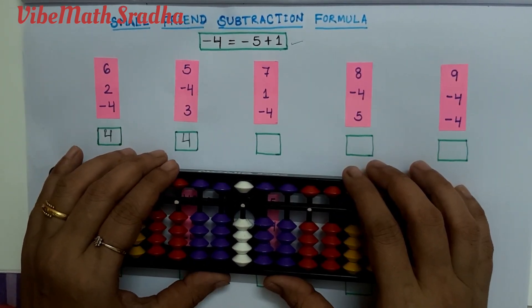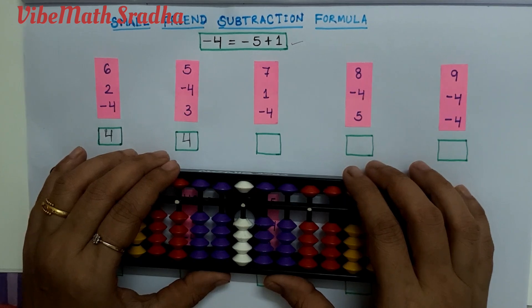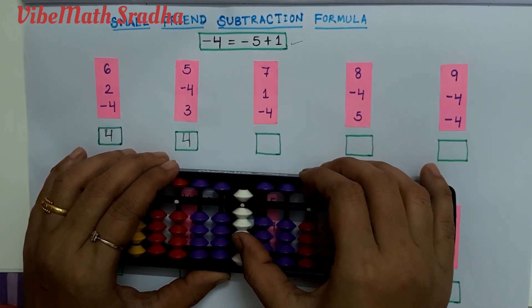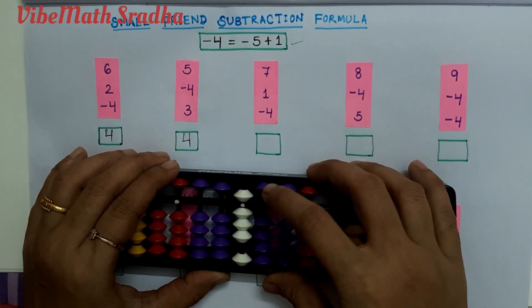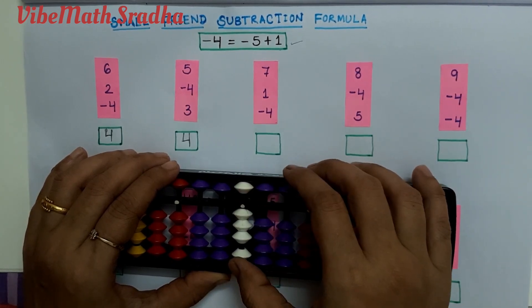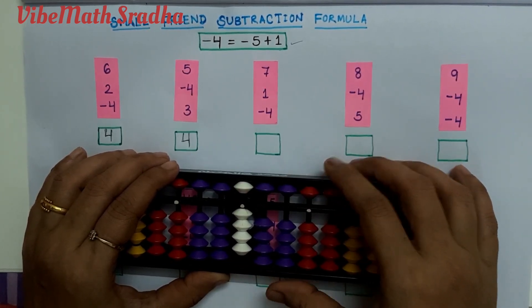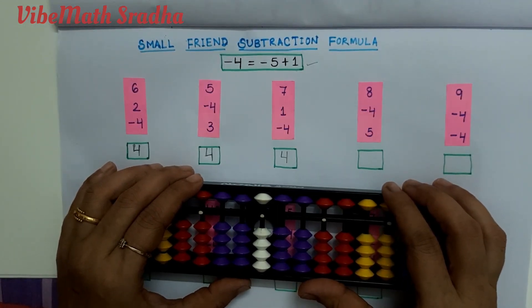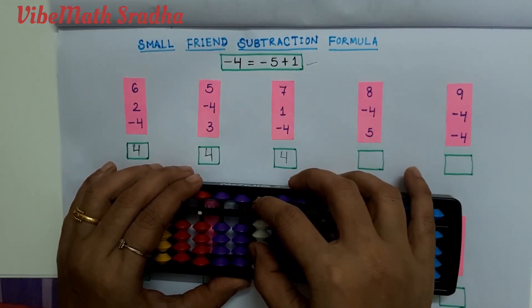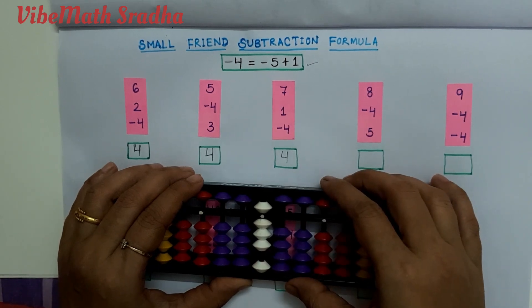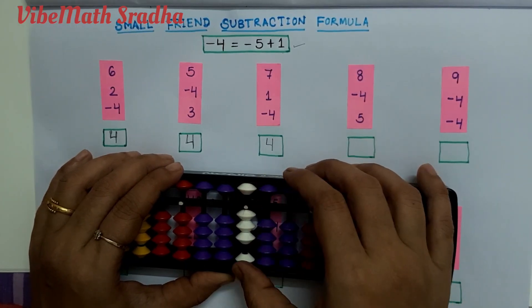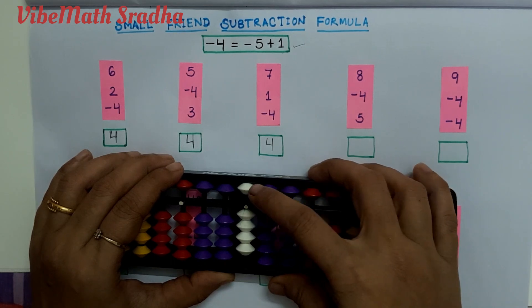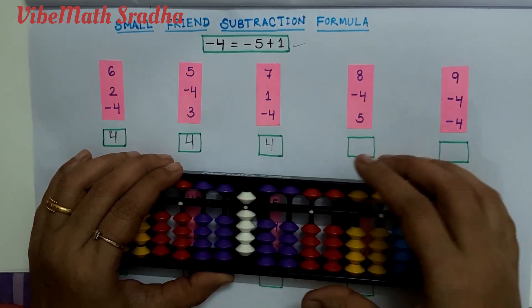Our third example is 7 plus 1 minus 4. So 7 plus 1 minus 4, applying minus 5 plus 1, the answer is 4. The fourth example is 8 minus 4 plus 5. 8 minus 4 equals minus 5 plus 1, then add 5. Answer is 9.